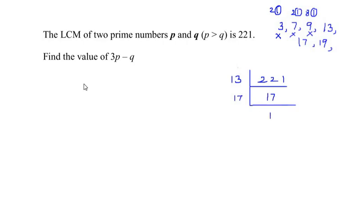They have clearly mentioned that p is greater than q. That means we need to take p as 17 and q as 13, because 17 is greater than 13.